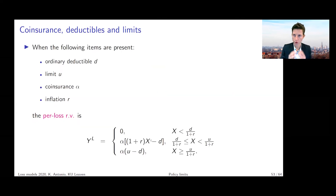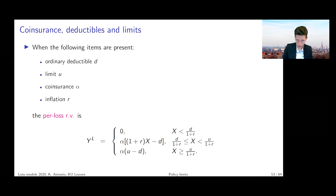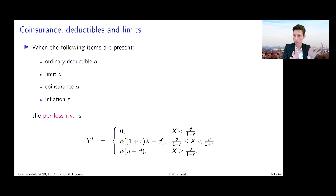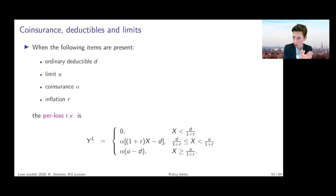As a wrap-up, we consider what happens when all modifications are combined: inflation, an ordinary deductible imposed after inflation, a policy limit U after inflation, and finally the coinsurance factor alpha. The correct order is: first apply inflation, going from X to (1+r)X; then impose both the ordinary deductible D and the policy limit U; and then, as the very last step, apply the coinsurance factor alpha.